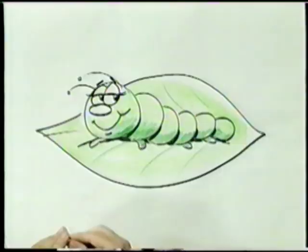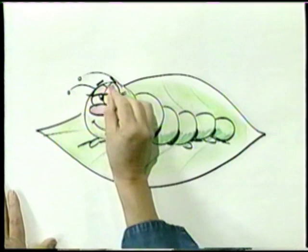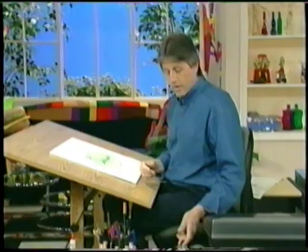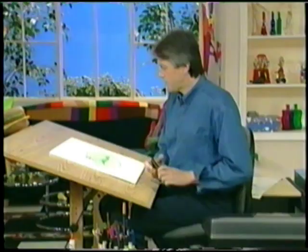Now we're going to do a little detail in the leaf. I'm going to use a little pink color for his nose — maybe a little bit of color on his cheeks and his eyelids too.